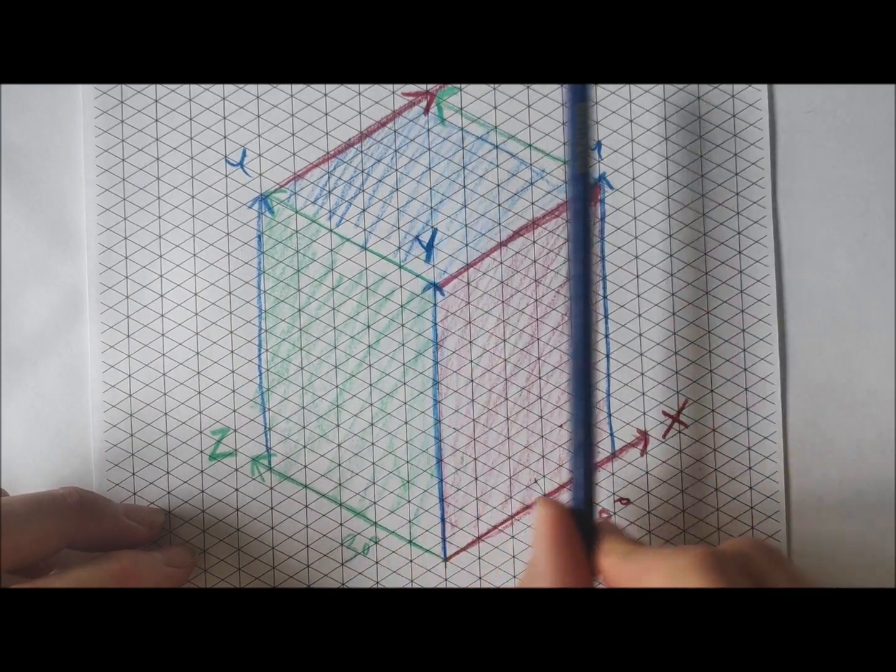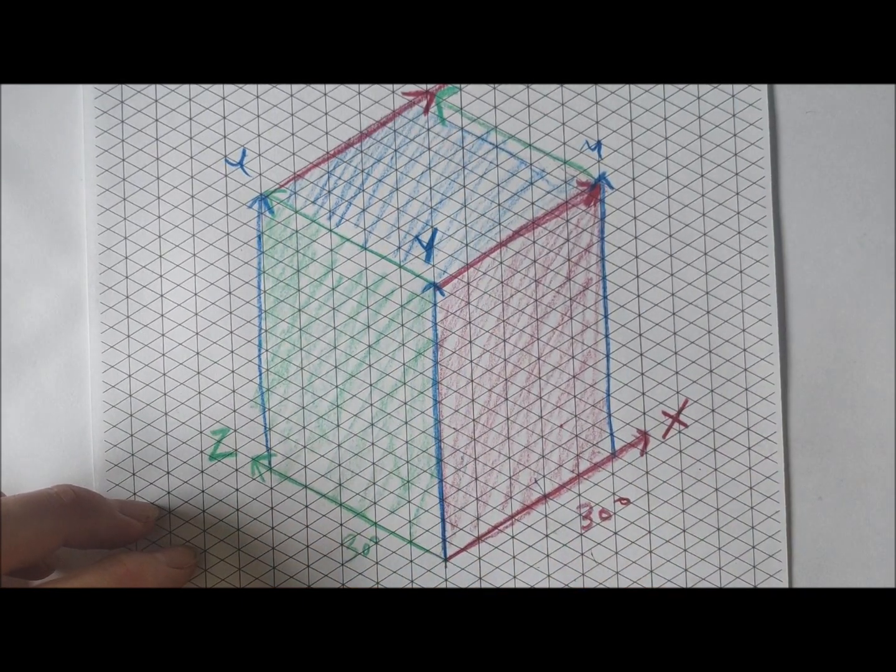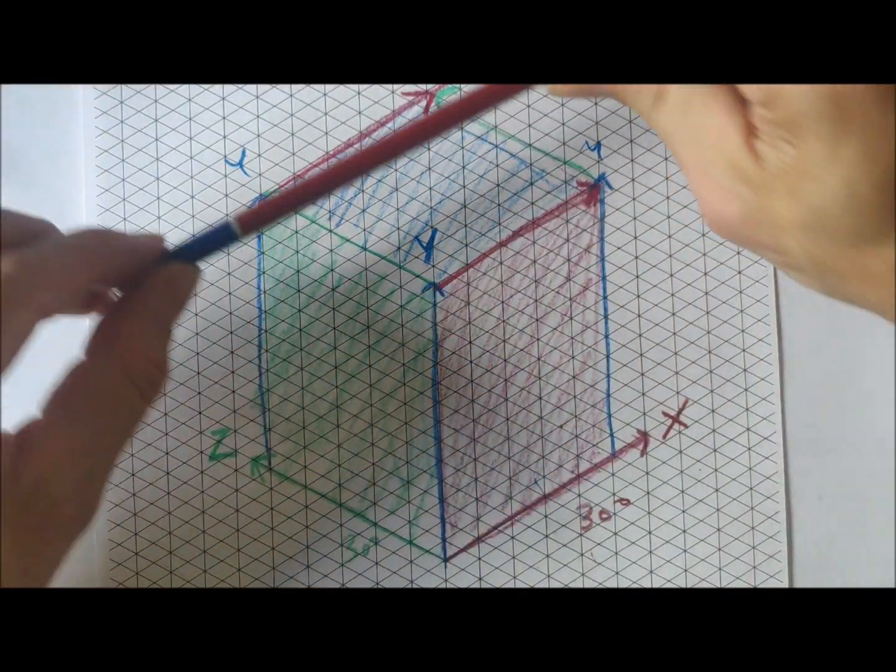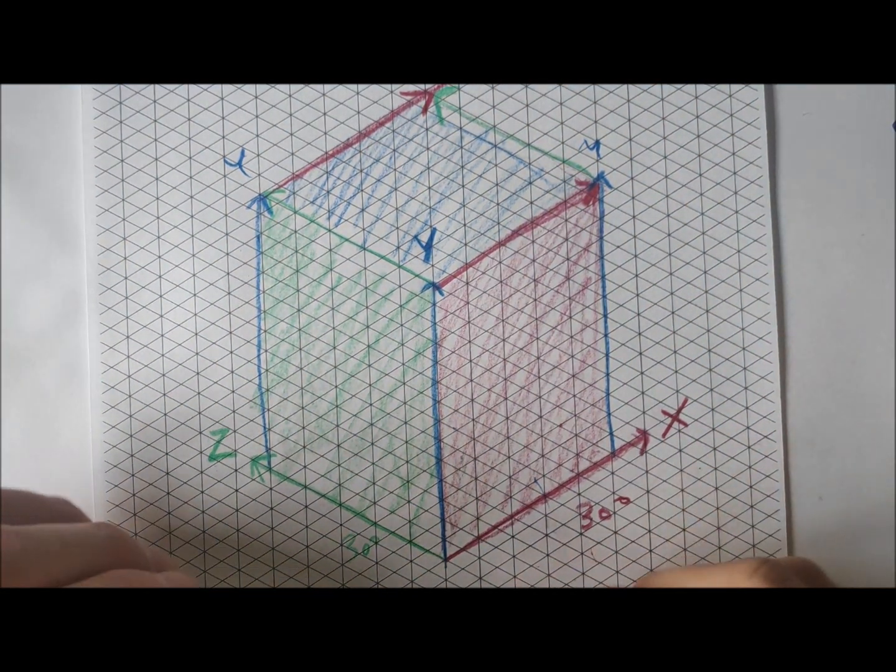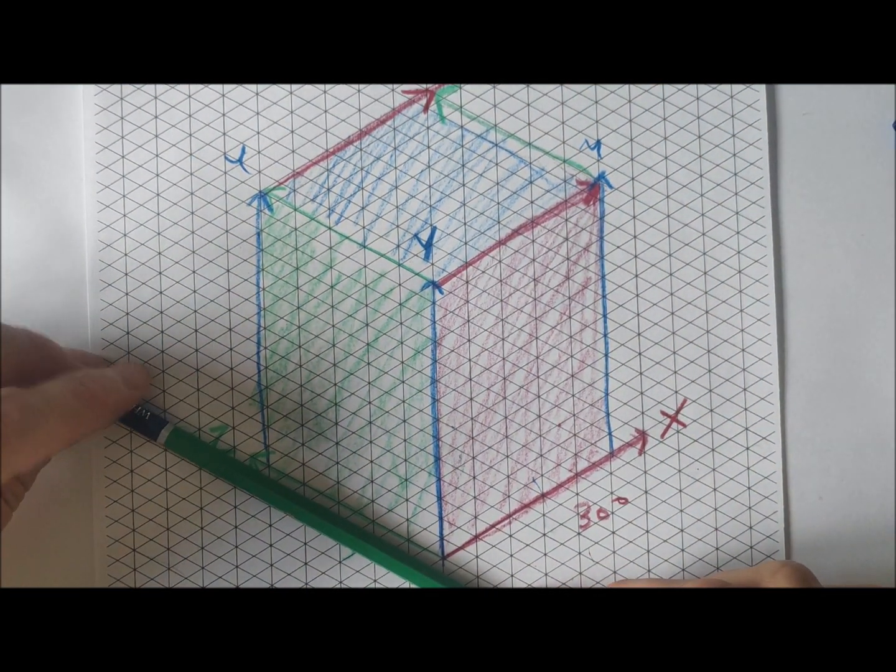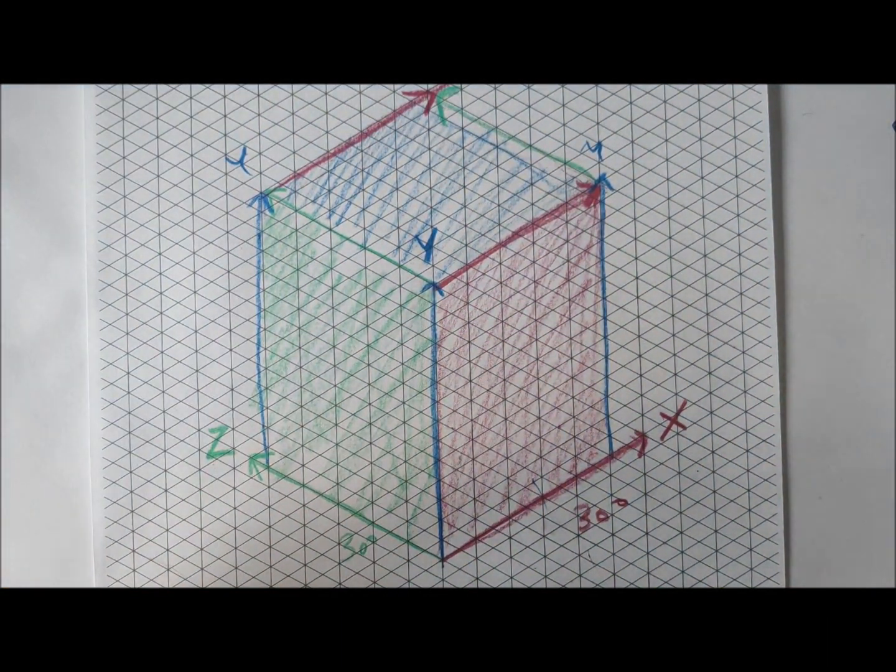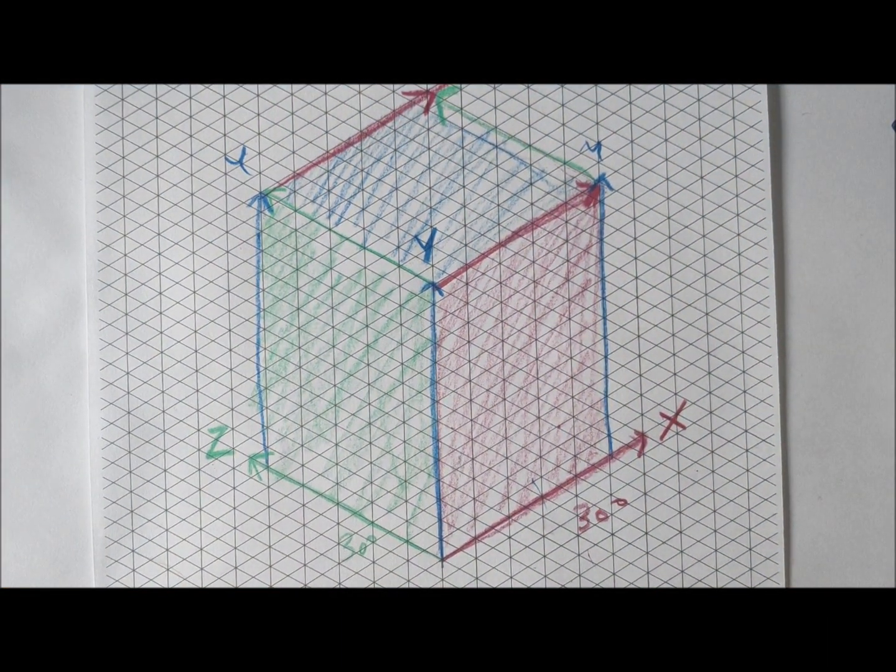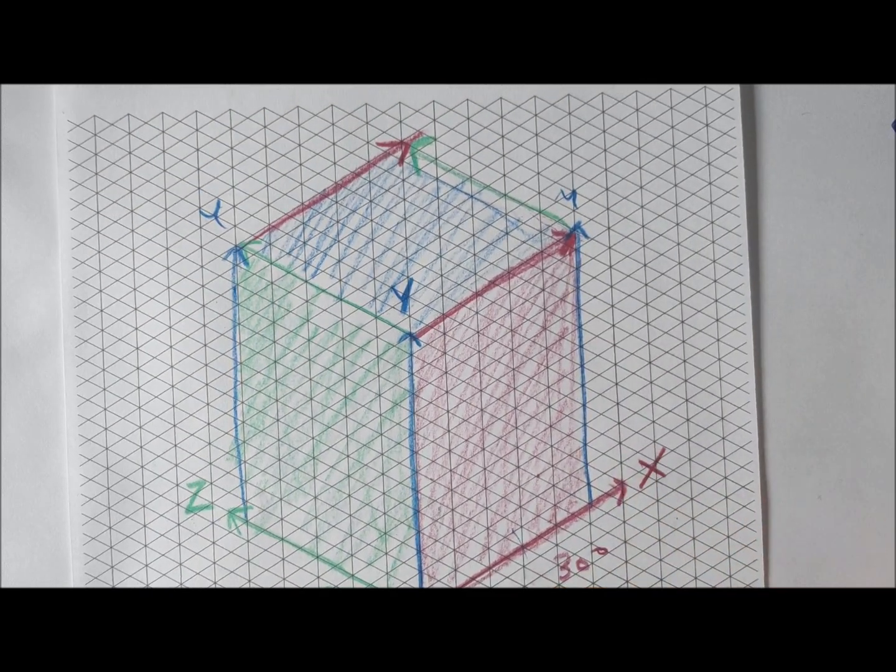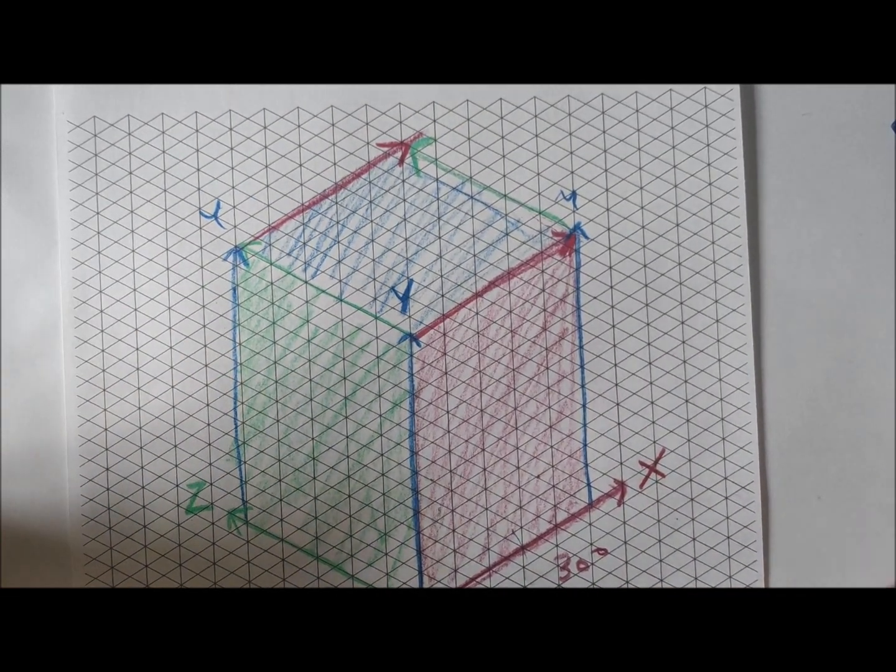Or in the case of isometric paper, they're on those lines going up like that. And we check that this line, and this line, and this line are all parallel. And then we go the other way, and we check that on the Z axis, that these lines are also all parallel. And then we should find that we've done a fairly good isometric sketch of a cube, or a box.